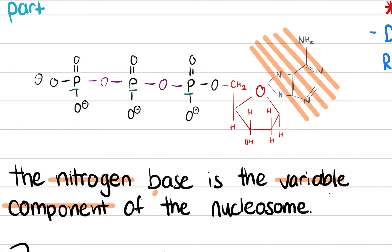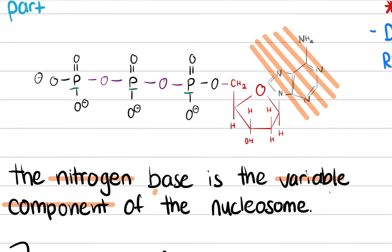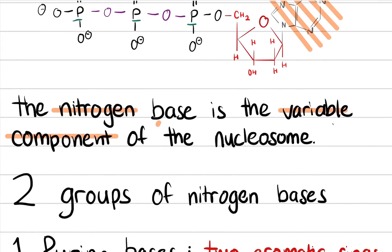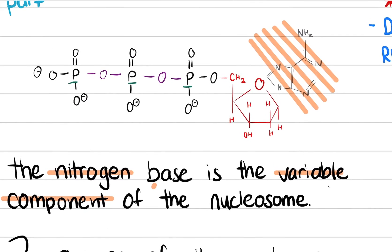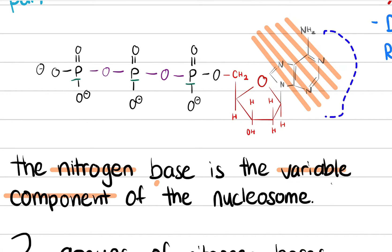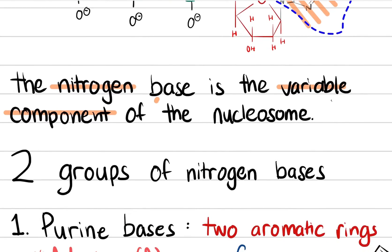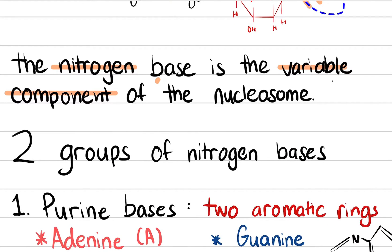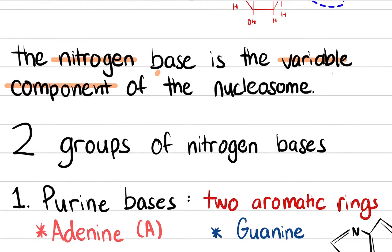We have just discussed that the nitrogen base is the variable component of the nucleotide, and that should make sense already. There are two groups of nitrogen bases. This aromatic group is the changing, variable part of the nucleotide, and there are four different possible aromatic ring structures that can be attached to the sugar molecule. These four possibilities are divided into two groups of nitrogen bases.